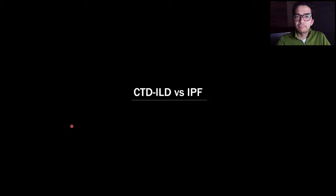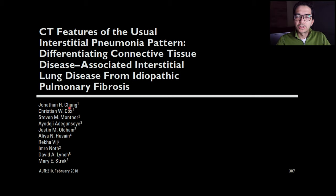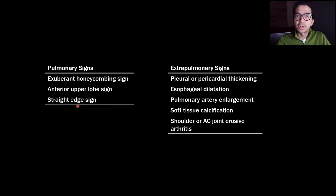A minority of patients with UIP will have a specific etiology like connective tissue disease rather than IPF. An article by Jonathan Chung and colleagues identified radiologic signs to help differentiate UIP due to IPF from UIP due to connective tissue disease. Jonathan Chung also has a YouTube channel about thoracic radiology with great cases. The three pulmonary signs identified are the exuberant honeycombing sign, the anterior upper lobe sign, and the straight edge sign — if you see any of these, it's more likely CTD-associated UIP rather than IPF.